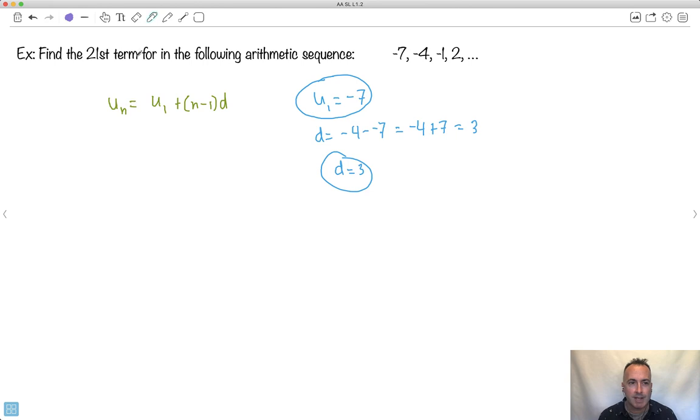So watch carefully what I'm going to do now. If I want the 21st term, I write U. And instead of saying N, I put in 21. So what's that going to be? It's going to be the first term, which is just minus 7, plus, and I want N minus 1. Well, 21 minus 1, I'll put in. All that times 3. If I do that, now I've got minus 7, plus, and 21 minus 1 is just 20. I'll do this all without a calculator. So I have minus 7, plus, 20 times 3 is the same as 2 times 3, which is 6. Just add a 0, so it's 60.